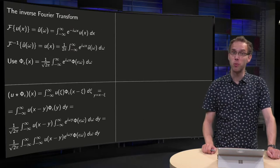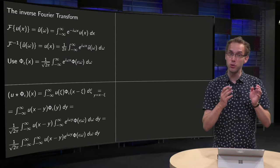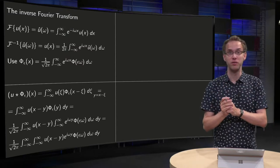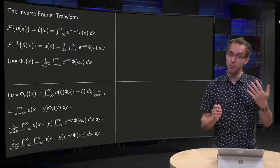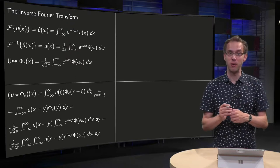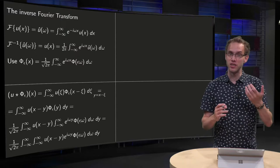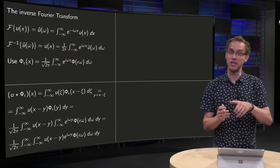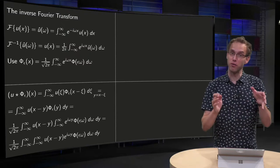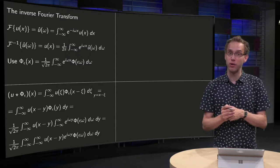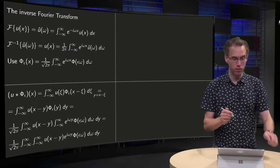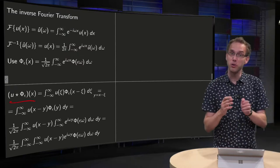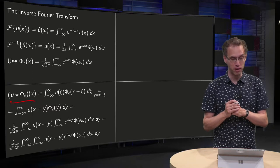We are going to take the convolution of our function u with φ_ε(x), and then take ε to zero. Since φ_ε(x) becomes a delta function as ε→0, this convolution will give us u(x). But first we compute it with a non-zero ε, with some ε greater than zero.